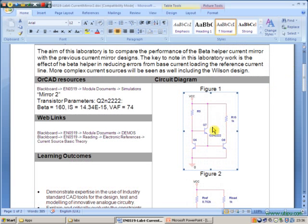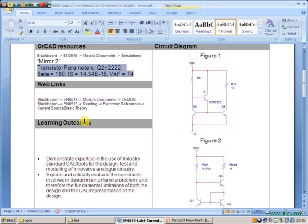The first design you can see in figure 1 is a beta helper current reference cell. Parameters can be picked up inside the Orcad references as noted here. The file for this is in mirror 2 on blackboard.